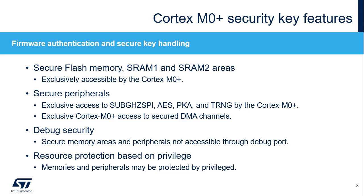The Cortex-M0 Plus Security is based on giving exclusive access to secure areas in flash memory, SRAM1, and SRAM2. Additionally, peripherals such as Sub-Gigahertz Serial Peripheral Interface, AES, Private Key Accelerator, and True Random Number Generator can be made secure to allow secure radio communication, cryptography, and key generation. DMA channels can be secured on a channel basis, allowing secure data transfer and channel control. The secure memory areas and peripherals are not accessible by the Cortex-M4 or through the debugger when secure debugging is disabled.